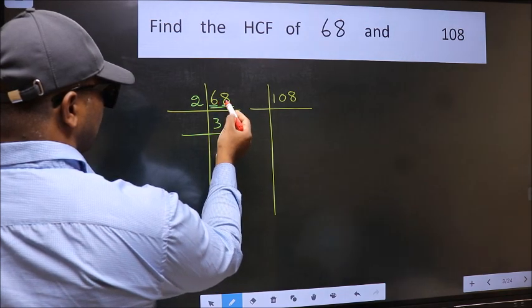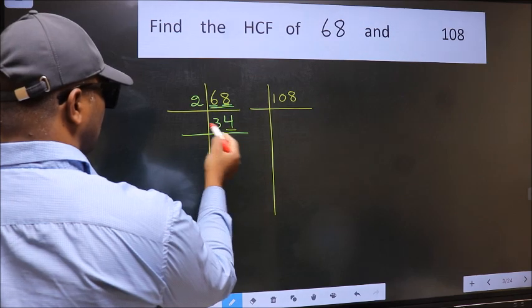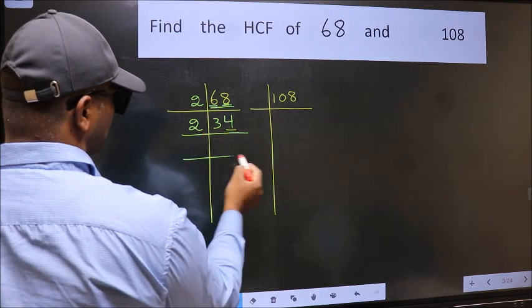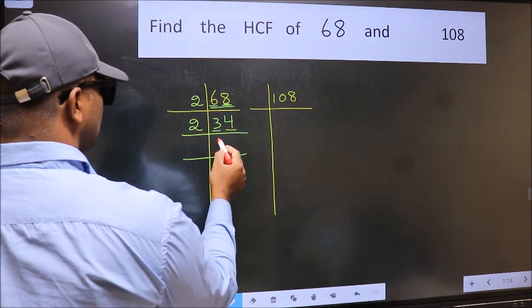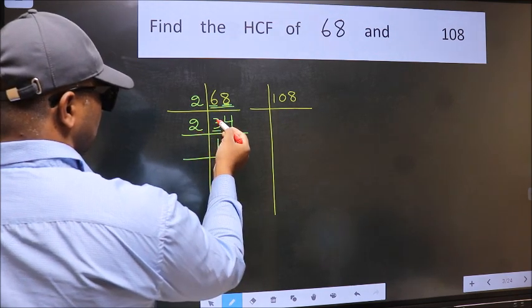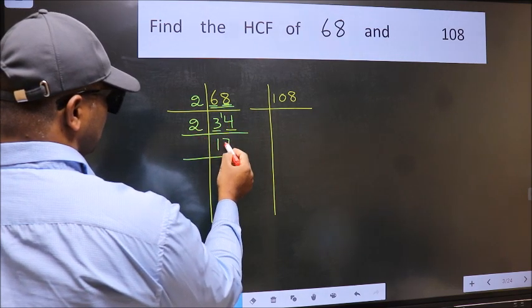The other number 8, when do we get 8 in 2 table? 2 times 4 is 8. Now, last digit 4 is even, so take 2. First number 3, a number close to 3 in 2 table is 2 times 1 is 2. 3 minus 2 is 1, 1 carried forward 14, when do we get 14 in 2 table? 2 times 7 is 14.